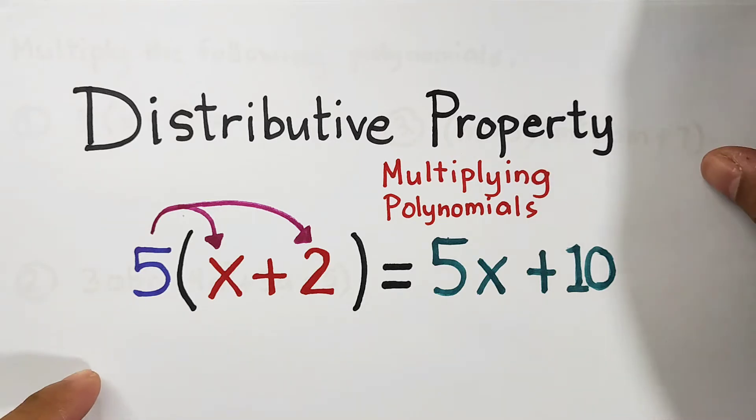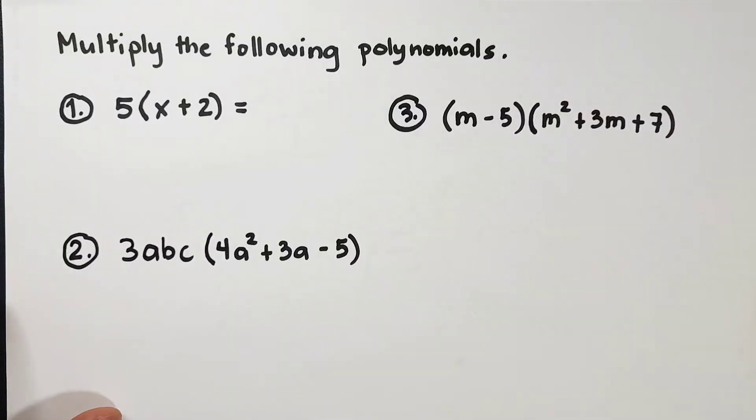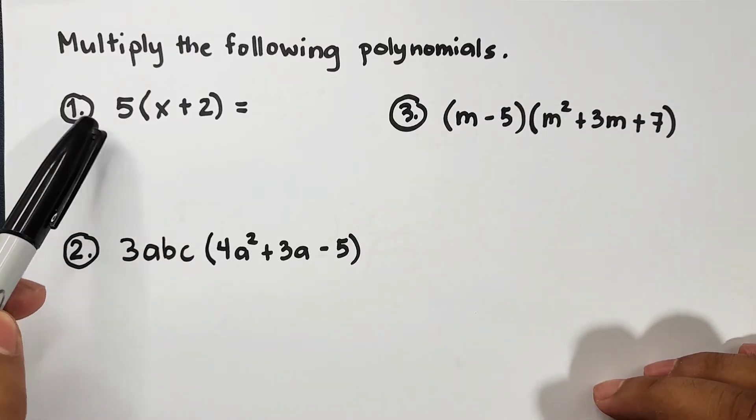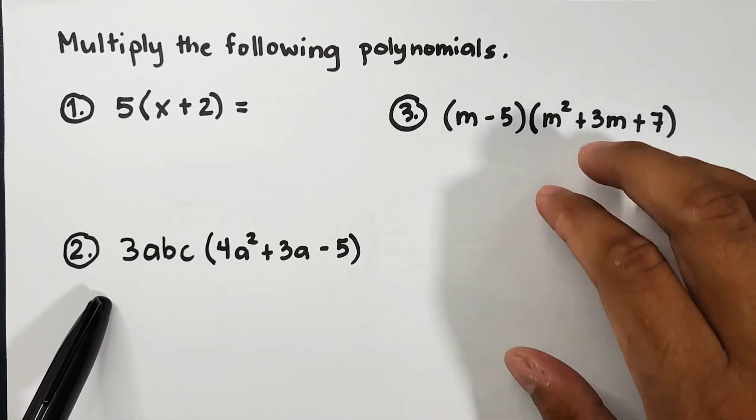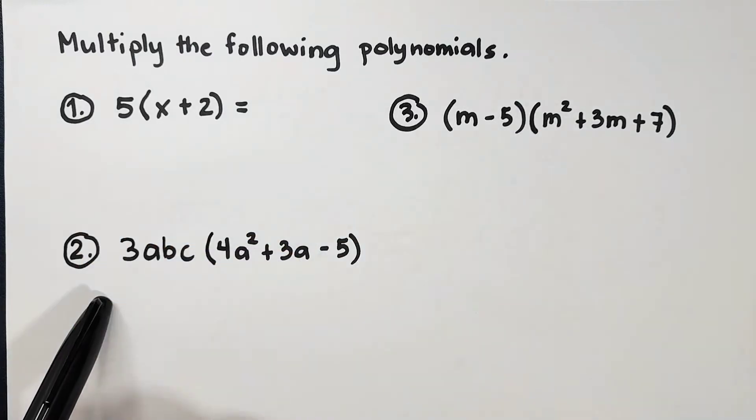For distributive property I have here three different examples to show you how to perform the distributive property. We have item number one, item number two, and item number three. Now here's the direction: multiply the following polynomials.